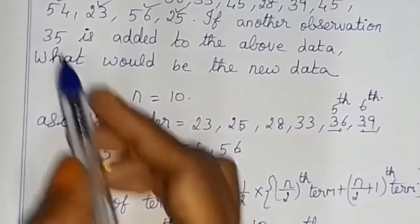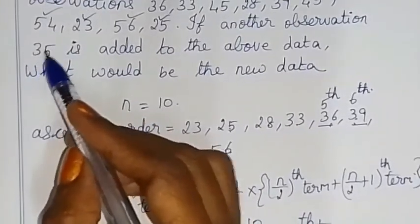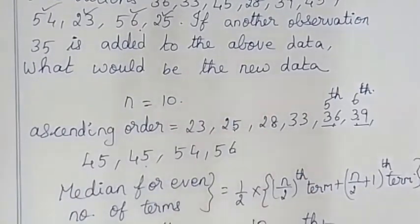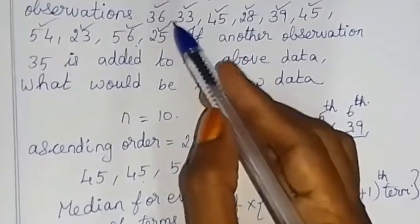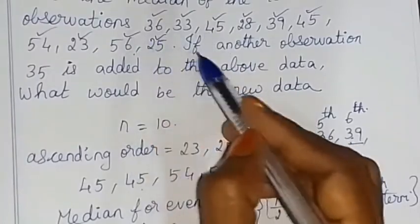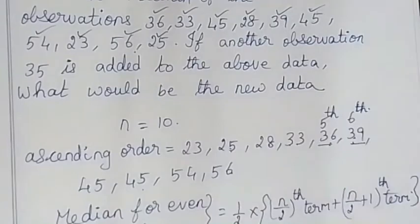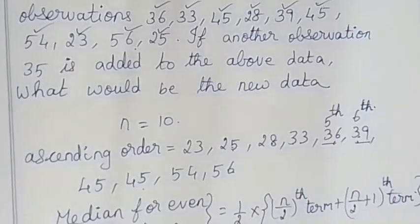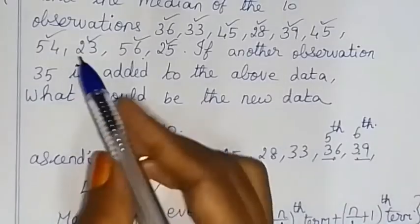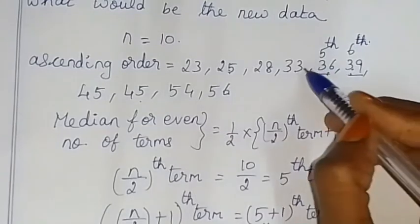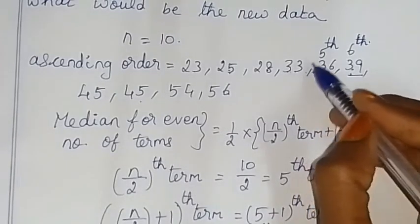Now we add 35 to the data. Adding 35, the number of terms becomes 10 + 1 = 11 terms. In ascending order, 35 is included. The order now includes 23, 33, 35, 36 and so on.